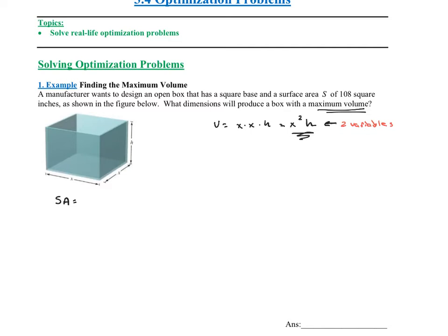If I look at the surface area of this box, the bottom has length and width of x squared. Each of the four sides would be x times h, so that would be 4xh — that's the front, the back, the left side, the right side. There is no top, so we don't need to worry about that. So x squared plus 4xh is our surface area equation for this box.